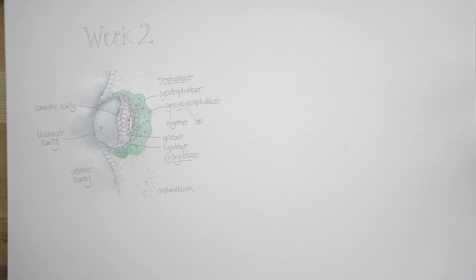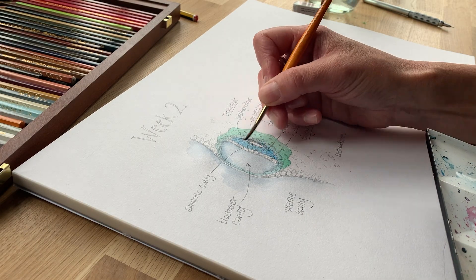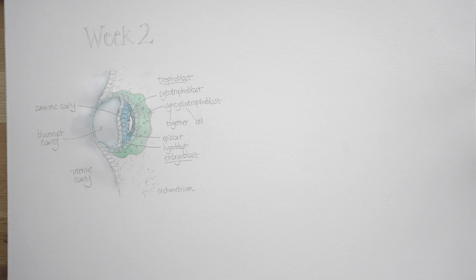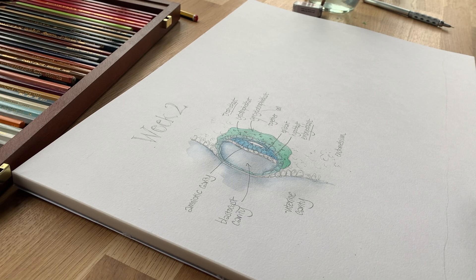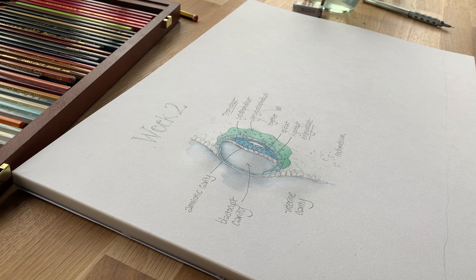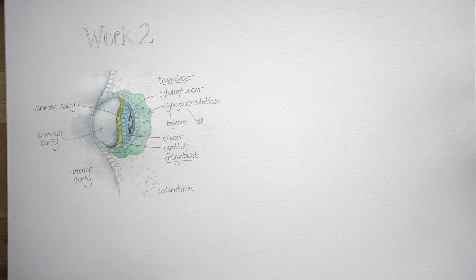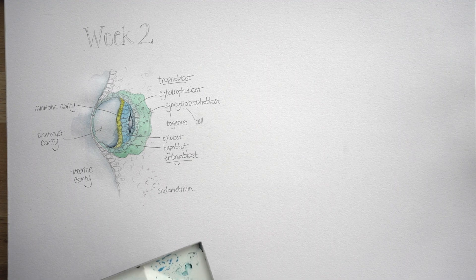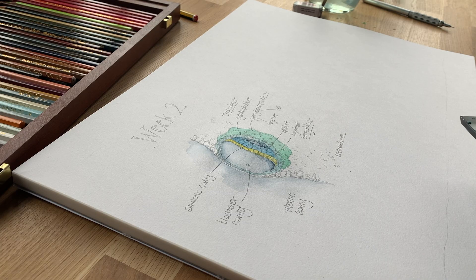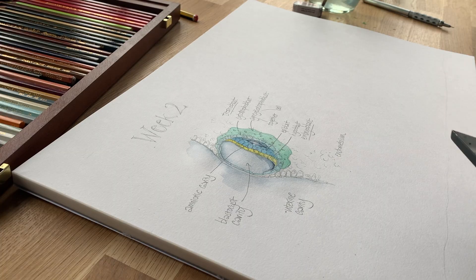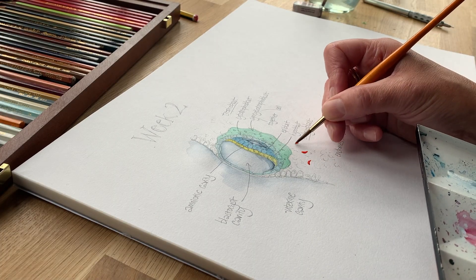I've coloured in the various layers here, using colours that resonate with the textbooks like Langman's and Larson's. So the syncytiotrophoblast is in a pine green, the cytotrophoblast I've done in a kind of turquoise, the epiblast I've done in blue, and the hypoblast in yellow. Blue and yellow really are standard colours, and will help us to track those tissues throughout development.